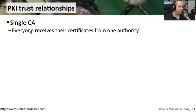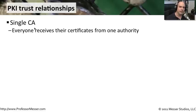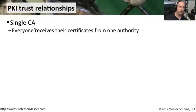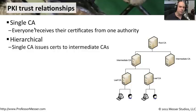For instance, if you have a single certificate authority, you might find that everyone is receiving all of their certificates from this one place, and you can trust that that one certificate authority is managing that process for everyone. If it's a large organization, though, you may find that it's easier to have more than one certificate authority, spreading the trust out a little bit — and then that environment is a hierarchical trust relationship where you might have a single root certificate authority.